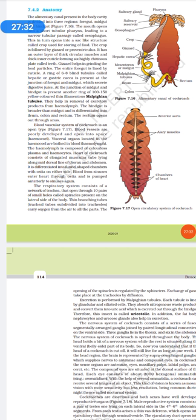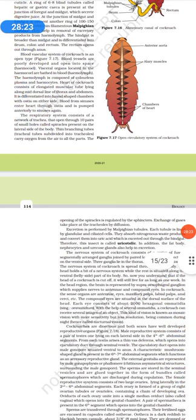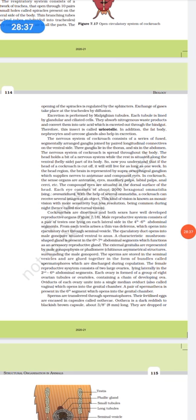Now, coming to the blood vascular system of the cockroach, it is poorly developed and it is open into the space, which is hemocoel. Visceral organs located in the hemocoel are bathed in blood. The hemolymph is composed of colorless plasma and hemocytes. Heart of cockroach, which consists of elongated muscular tube lying along the mid-dorsal line of the thorax and the abdomen. It is differentiated into funnel chambers with ostia on either side. Blood from sinuses enter the heart through ostia and is pumped anteriorly to the sinuses again. The respiratory system consists of 10 pairs of small holes, which are called spiracles. Thin branching tubules, which carry oxygen from air to all parts of body. The opening of the spiracles is regulated by sphincters. Exchange of gases takes place at the tracheae by diffusion.